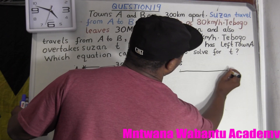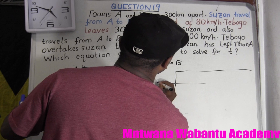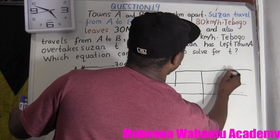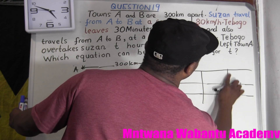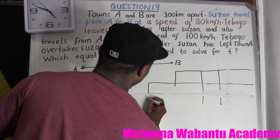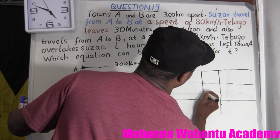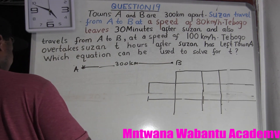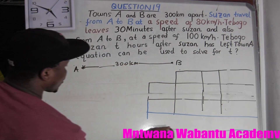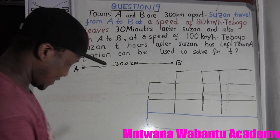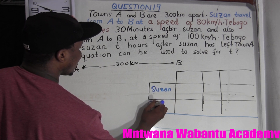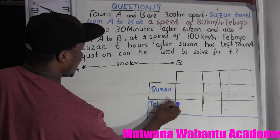Let's draw a table here, write the names, and write the details on top. So the details — we just need three columns. Let's plug in the names. The first one is Susan, then Teboho.